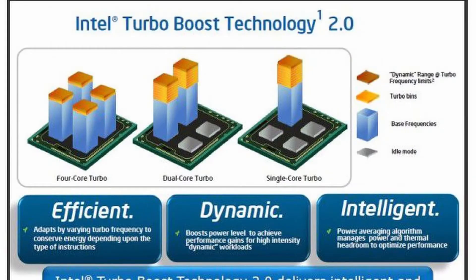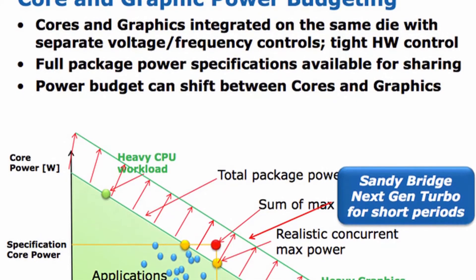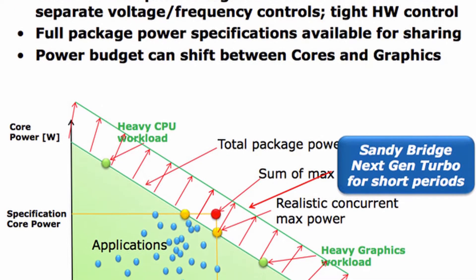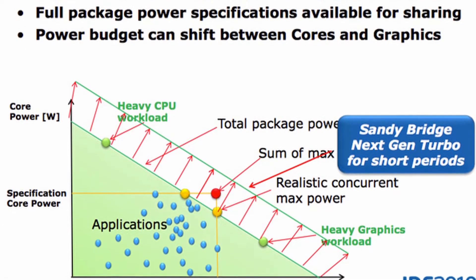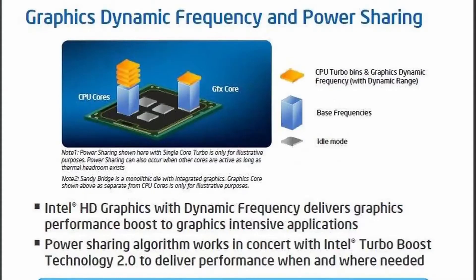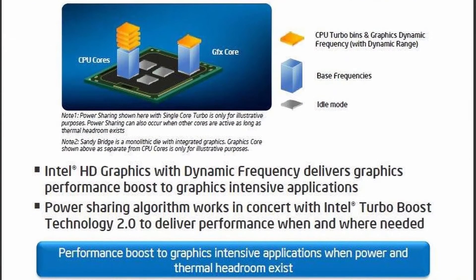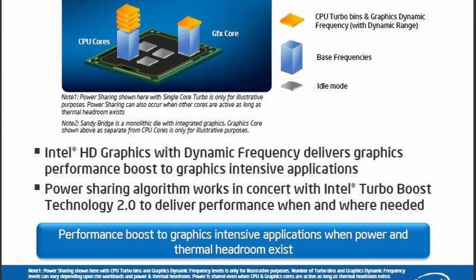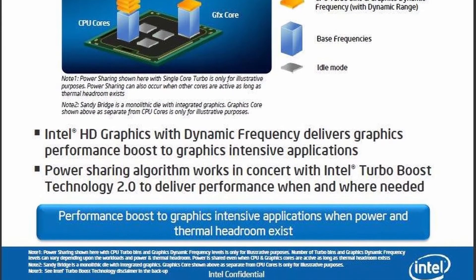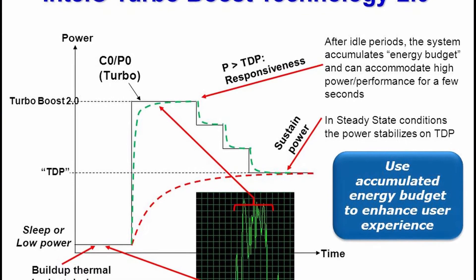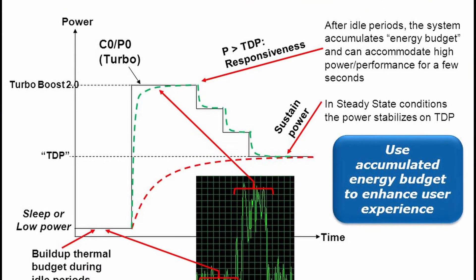First, Turbo Boost 2.0 increased the number of turbo bins over base frequency. Second, Turbo Boost 2.0 factors in not only the CPU cores but also the other parts of the CPU die. For example, the integrated graphics can boost to a higher frequency in gaming workloads where GPU performance is more important than CPU performance. But most importantly, Turbo Boost 2.0 expands the power budget to well above the TDP rating.